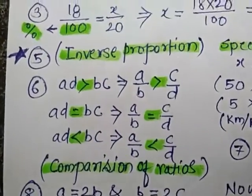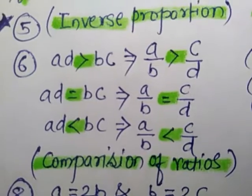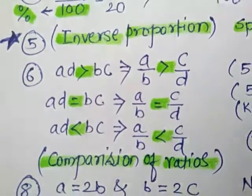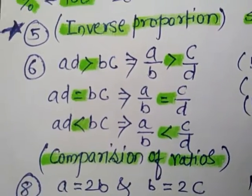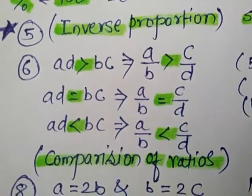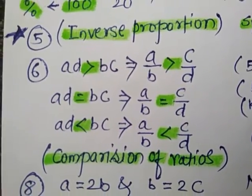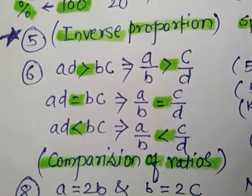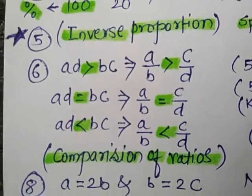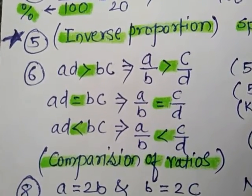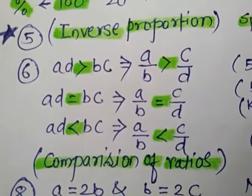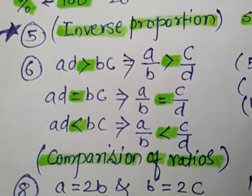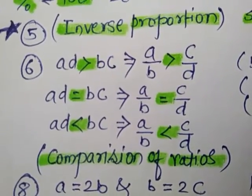In comparison of ratios: if AD is greater than BC, then A divided by B is greater than C divided by D. If AD is equal to BC, then A divided by B is equal to C divided by D.